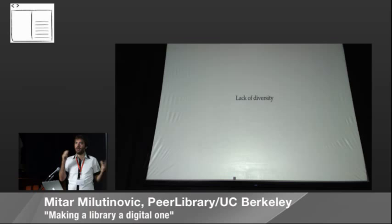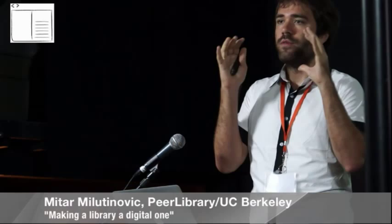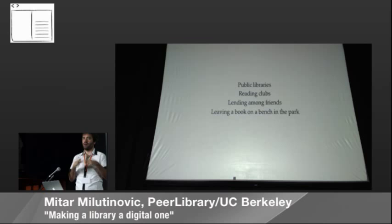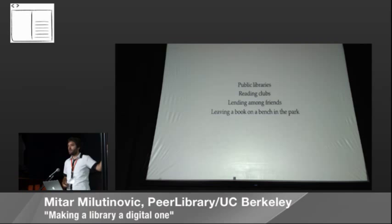That brings a lack of diversity. If you look at the web, how diverse it is — how many different tools we have to consume and create content, how many different pipelines of producers, editors, and everybody else. But if you look at books and other things online, it's still traditional, it's a lack of diversity, very few systems. In the real world, people innovated around books. We created public libraries — this was innovation. We have reading clubs, lending among friends. You can give a book to somebody, leave a book on a bench in a park. How can we do anything like this on the web?